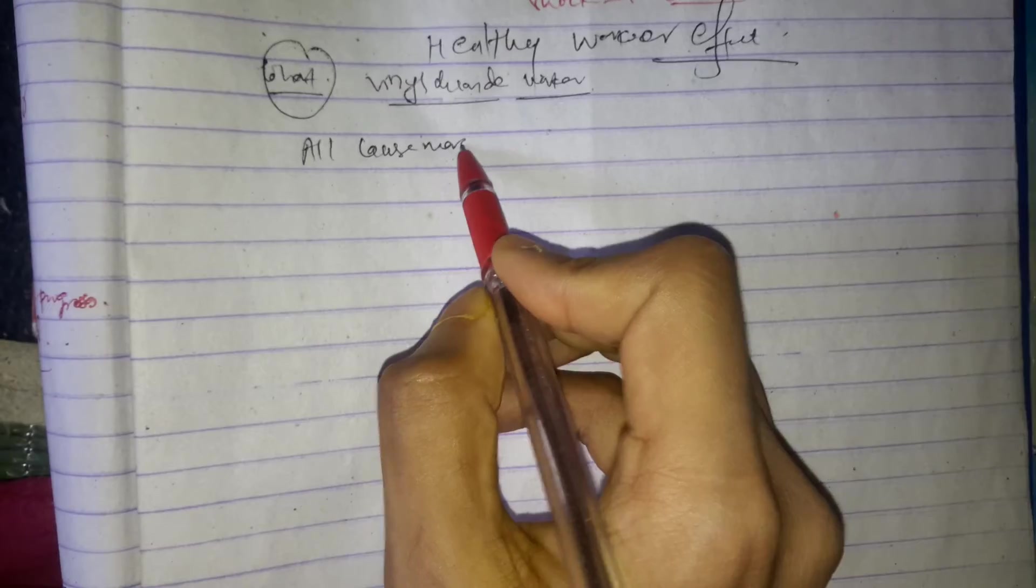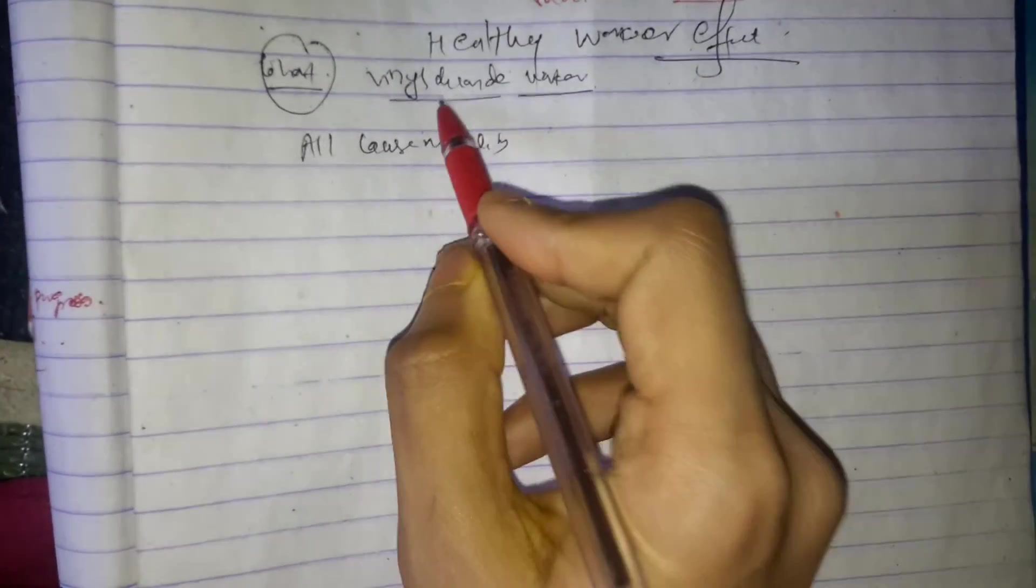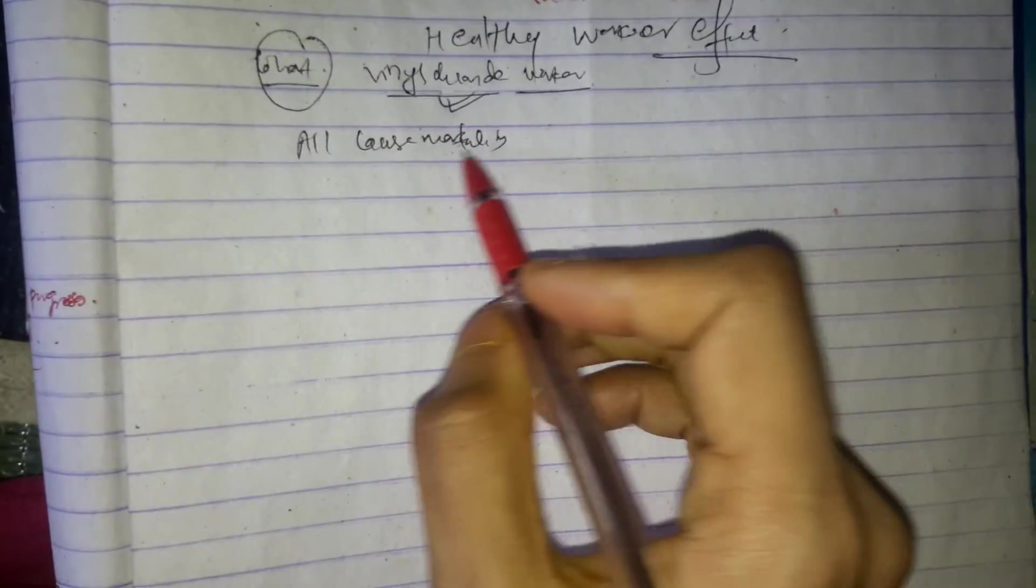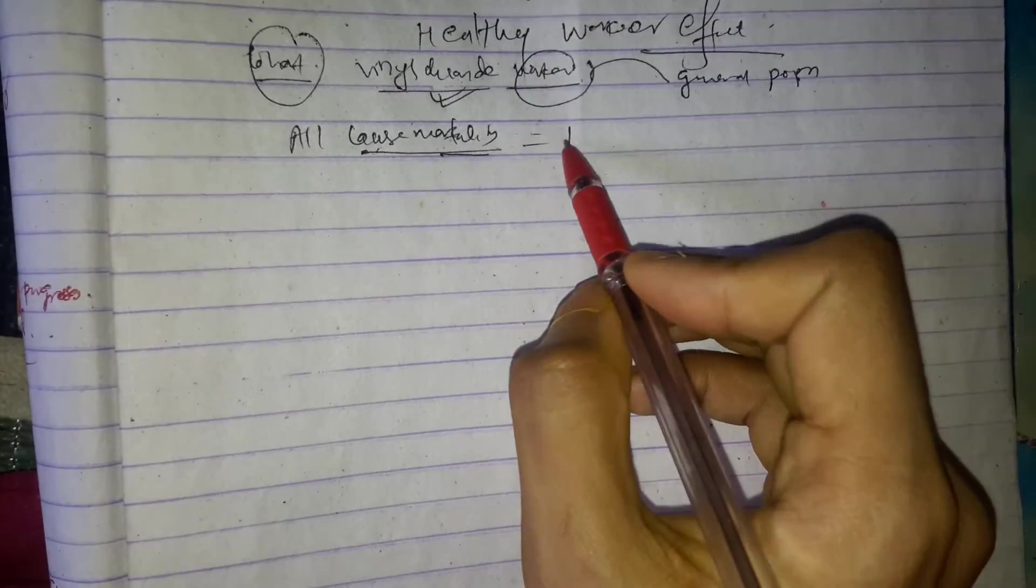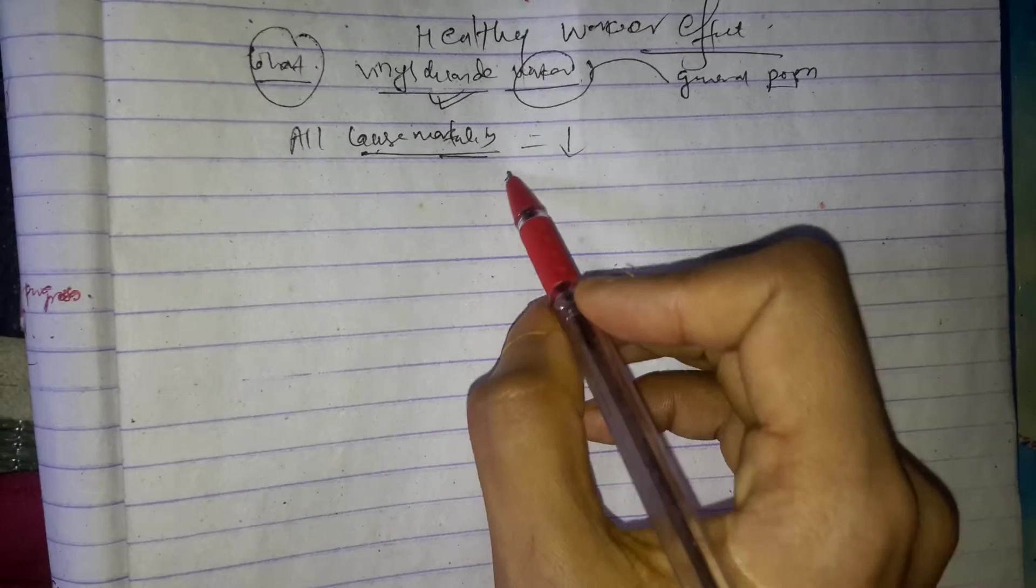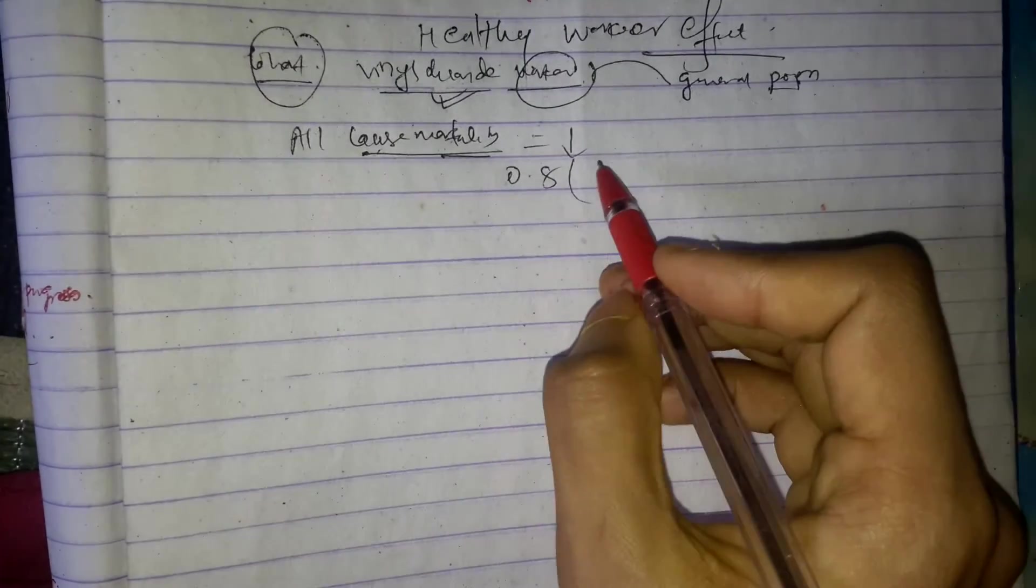What is the all-cause mortality due to exposure to vinyl chloride? This was compared - these workers were compared to general population and all-cause mortality was found to be decreased compared to general population.